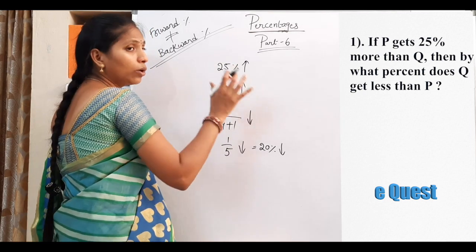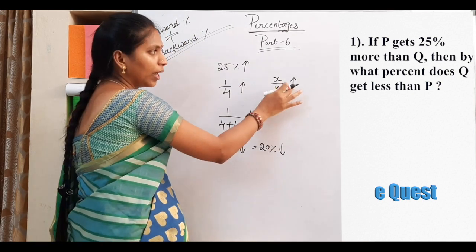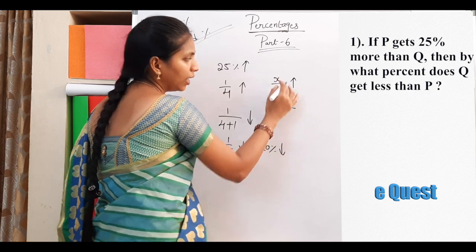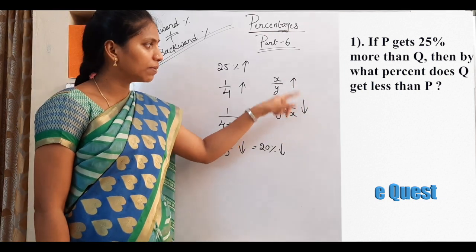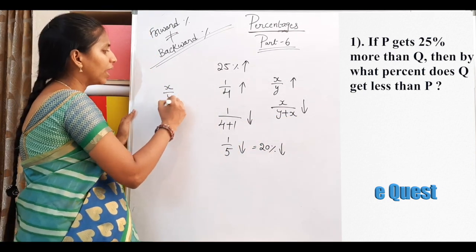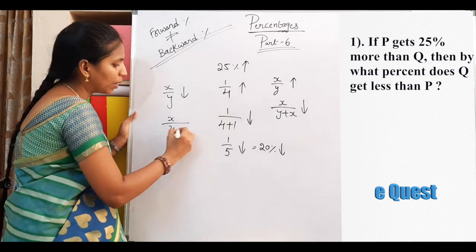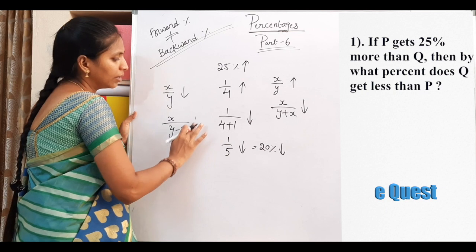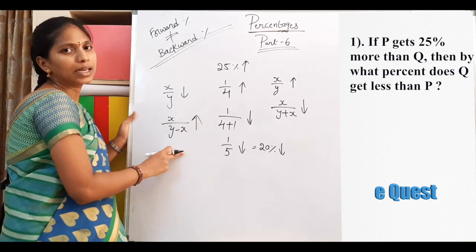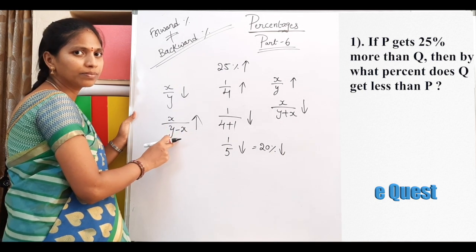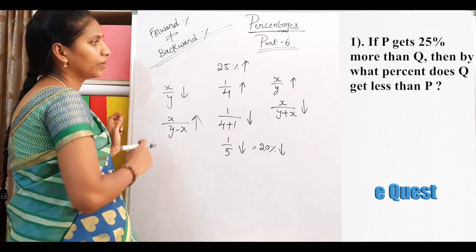The general formula: if the fraction is x by y and the symbol is increases, then it becomes x by (y plus x) decreases. If x by y is decreases, then it becomes x by (y minus x) increases — the sign is reversed. The minus is used because the original symbol was decrease.